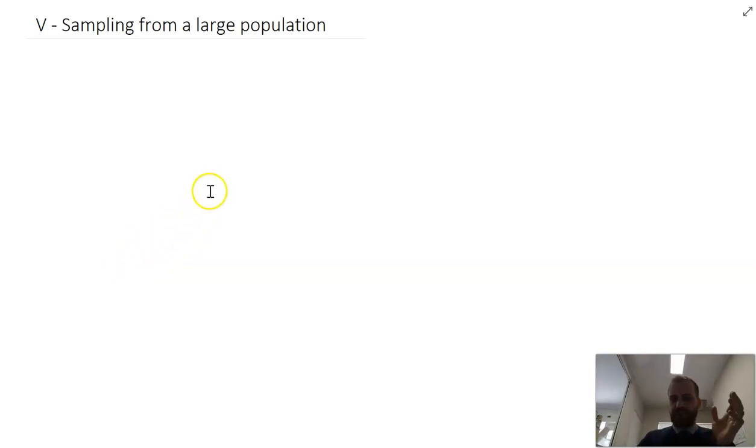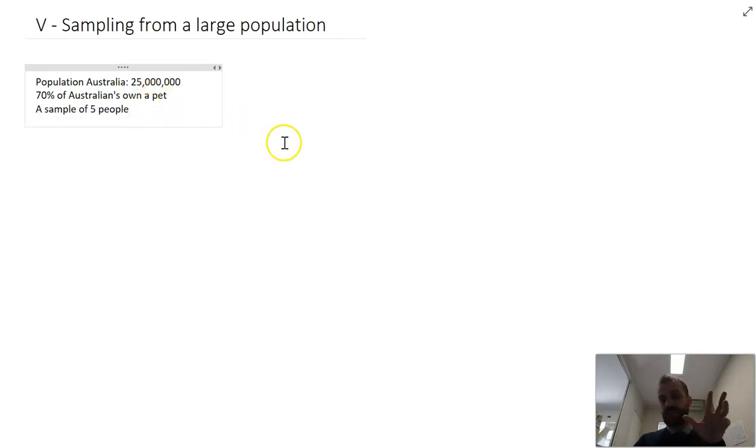So in a previous video I was sampling from a small population. In this video I'm going to be sampling from a large population and there's an important difference between those two. So the population of Australia is 25 million and let's come up with some characteristics for them. 70% of Australians own a pet and I'm going to take a sample of five people.